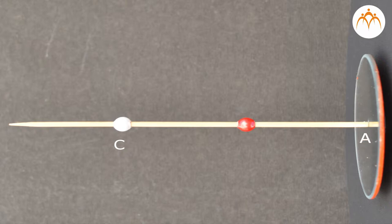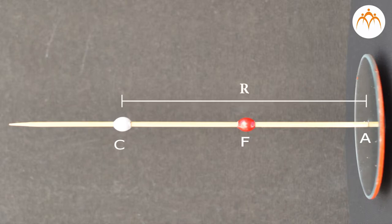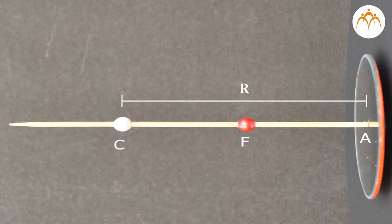The point on the mirror's surface where the principal axis meets the mirror is known as the vertex, denoted by the letter A. The vertex is the geometric center of the mirror. Midway between the vertex and the center of curvature is a point known as the focal point, denoted by the letter F. The distance from the vertex to the center of curvature is known as the radius of curvature, represented by capital R. The radius of curvature is the radius of the sphere from which the mirror was cut.